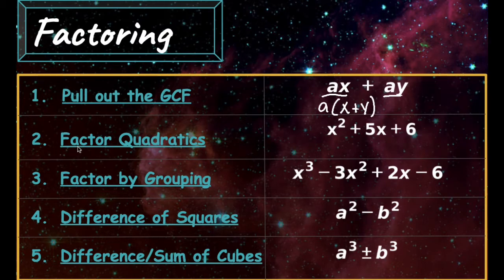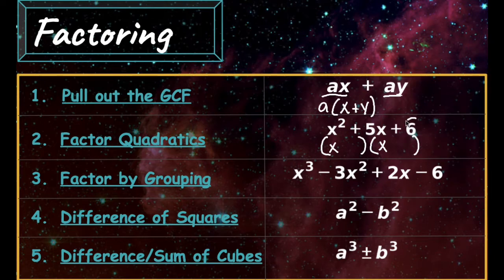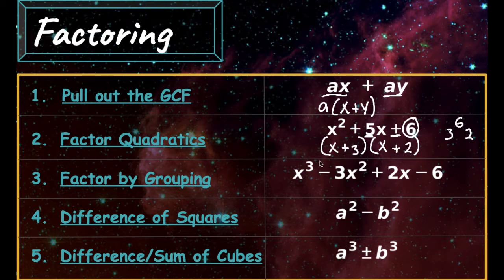The second way to factor is factoring a quadratic. Here we're breaking down a trinomial into two binomials that are multiplying together. Since the first term is x squared, we're going to write x as the first term of each binomial. Then we need to look at the last number and think about factors of 6 that add up to make 5. So that should be 3 and 2, and since both are positive, both of these will also be positive.